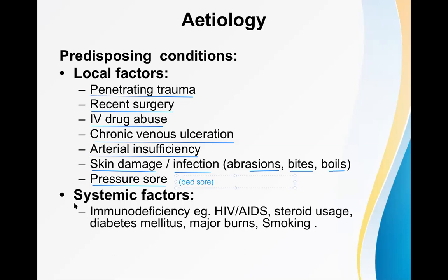Even more important are systemic factors: immunodeficiency like HIV and AIDS, corticosteroid use for a long time, diabetes mellitus, major burns, and smokers. All of these are considered systemic factors; many make the patient immunocompromised, as a result of which serious infection can occur.